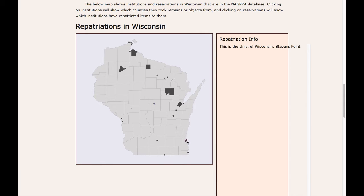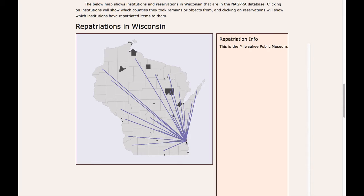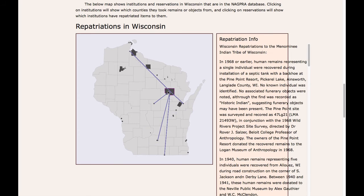The user clicks on a dot — in this case the Milwaukee Public Museum — and this shows all the counties from where the Milwaukee Public Museum has taken items or remains from. The user can also click on a reservation, and the lines then show which institutions have returned items back to the reservation. The user is also able to learn more by looking at the information panel to the right.